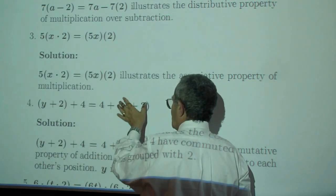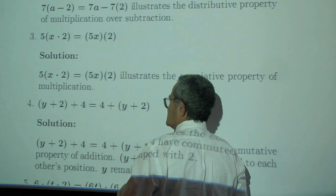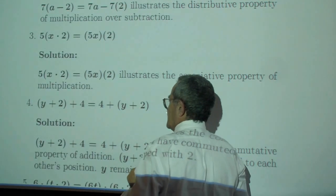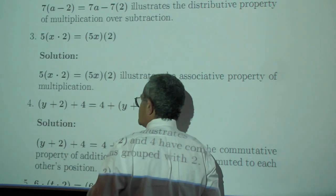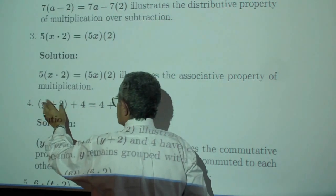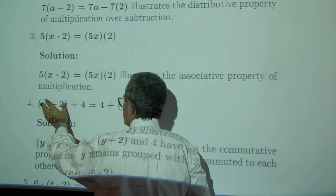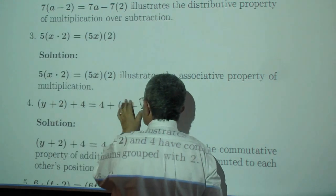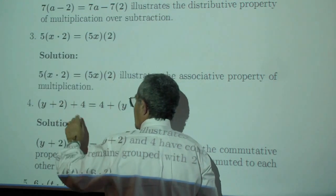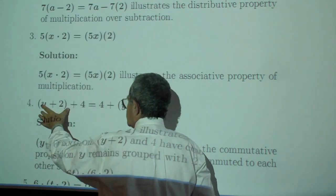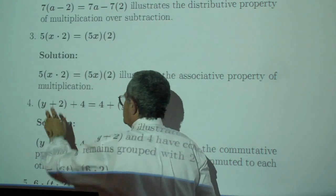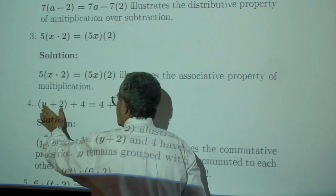To the second position. Let me rephrase that. The four has traveled from the first to the second position, and this whole number has commuted from first position to second position. We have illustrated the commutative property of addition. Don't let the parentheses fool you. Nothing has commuted in the y and the two.